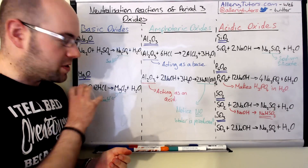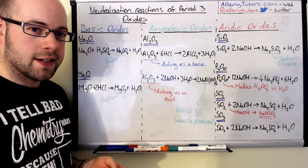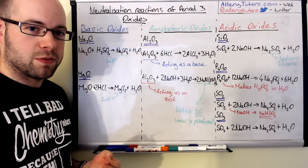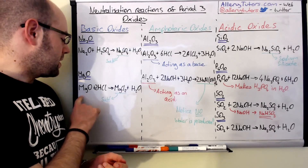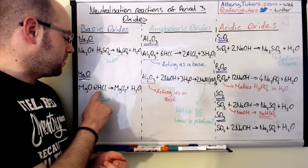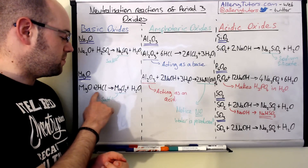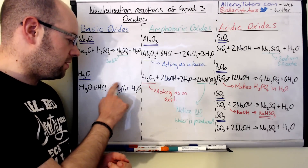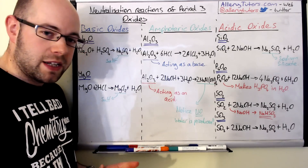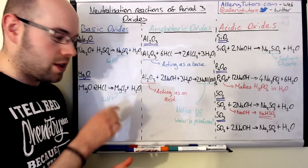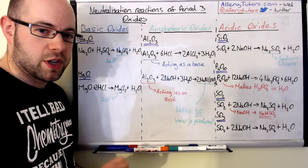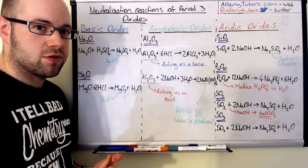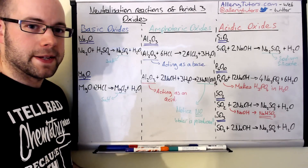In the second example, we have magnesium oxide reacting with hydrochloric acid. So magnesium oxide plus HCl will form magnesium chloride — there's your salt — plus water. Nice and straightforward.